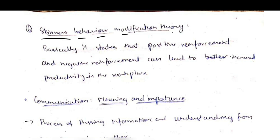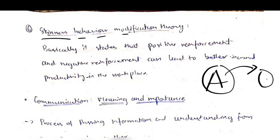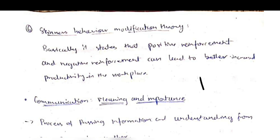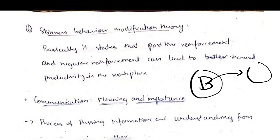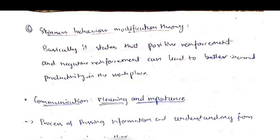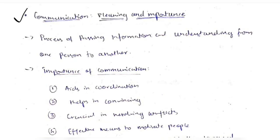The sixth theory is Skinner's Behavior Modification Theory. He focuses on reinforcement: if you do task A you get a reward, and because of that reward you will do more of task A. Conversely, if you do task B which you shouldn't have, you'll be punished, and due to that punishment you'll avoid doing task B. This is known as reinforcement.